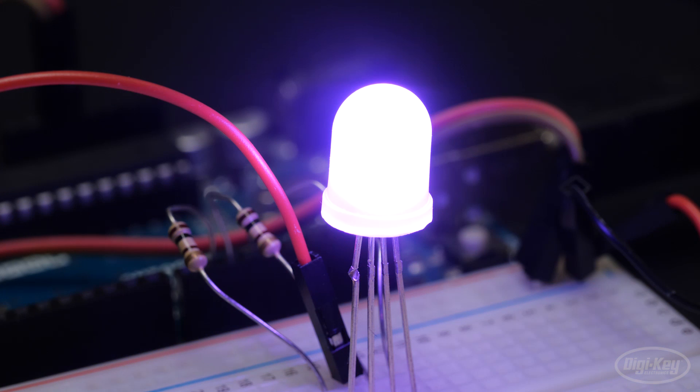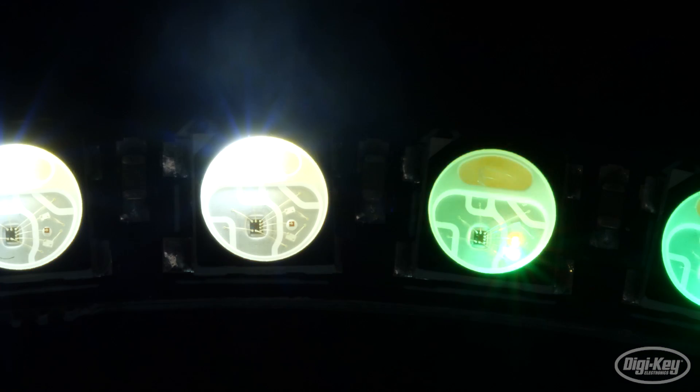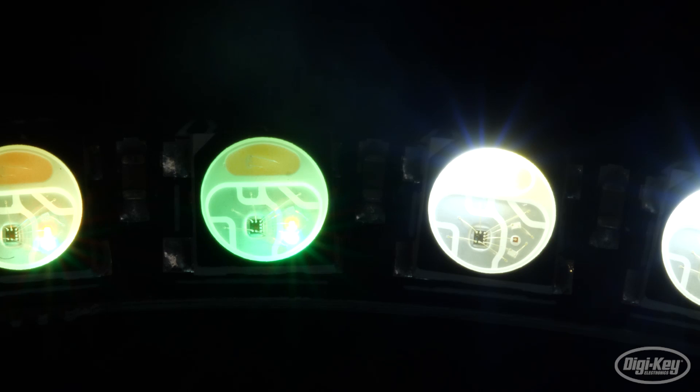PWM is also used to allow for color mixing in an RGB LED. One LED of each color is set to different brightnesses, and when they mix together in a single package, can form any color of light.